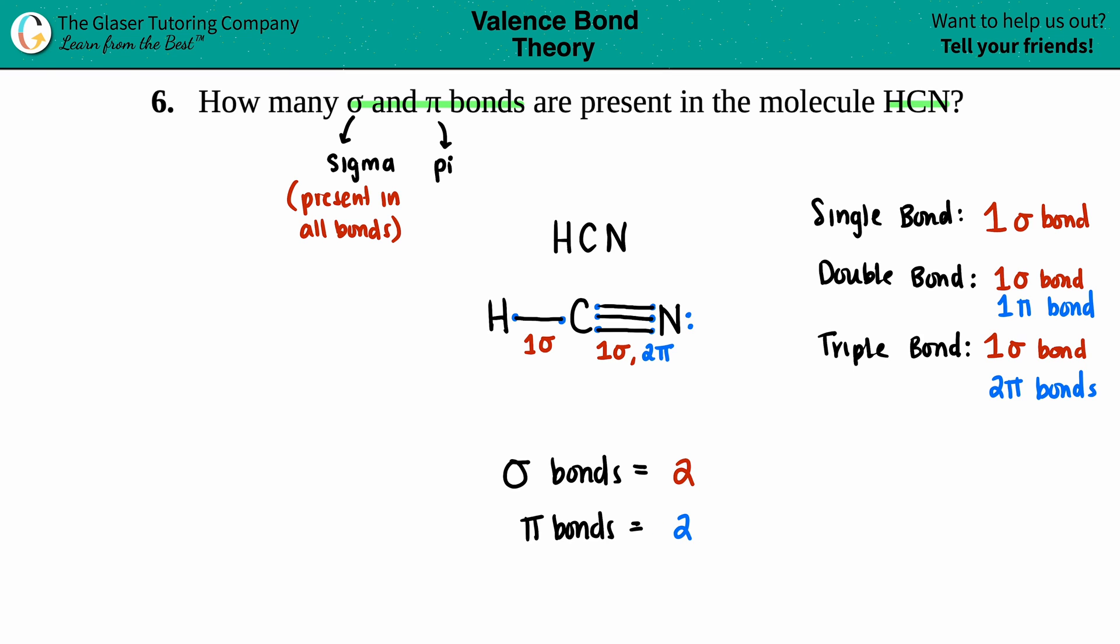And this total, two plus two, should equal how many lines you have: one, two, three, four lines. Two plus two is four, and we are done. So this is the answer: two sigma, two pi bonds in HCN. And there you go. What'd you think? I hope this helped.